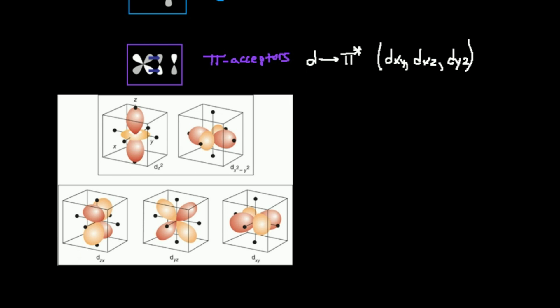Metals have five available d orbitals. We have the two quadratic orbitals — dz squared and dx squared minus y squared — and then three orbitals: dxz, dyz, and dxy. This group up here are the e sub g orbitals, and down here are the t2g orbitals, as we saw in the octahedral splitting diagram.